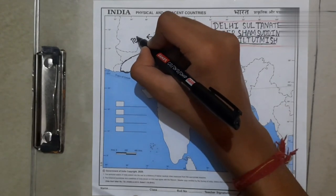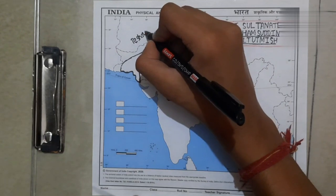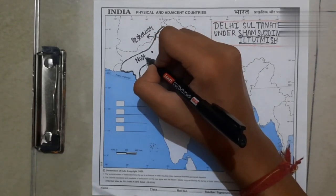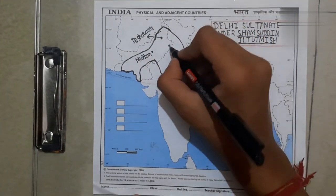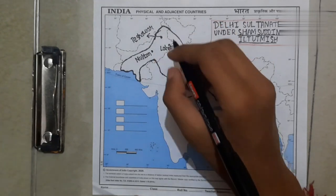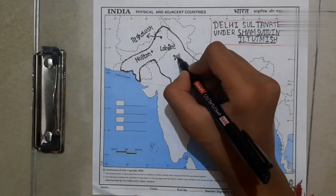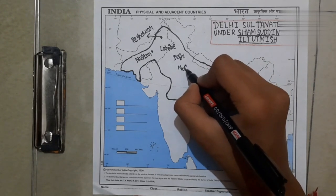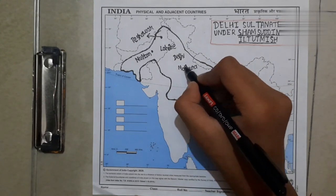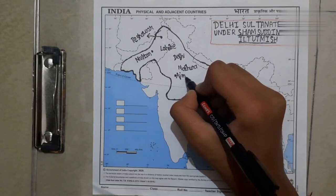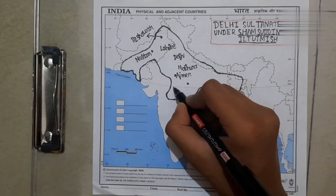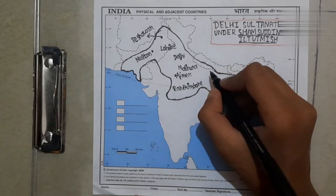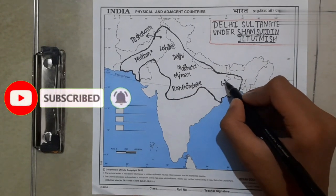This is Peshawar. This is Multan. This is Lahore. This is Delhi. This is Mathura. This is Ajmeer. This is Runtamvor. This is Gor.